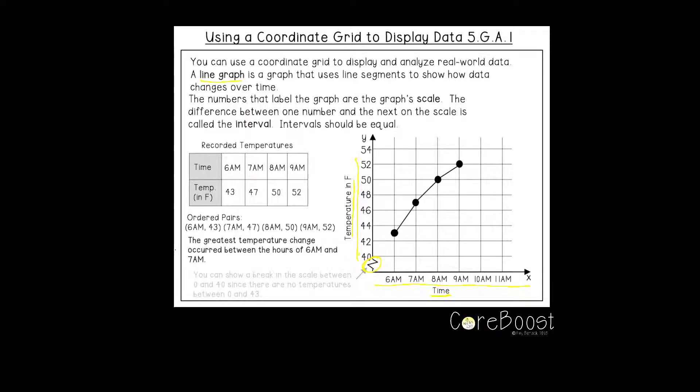So let's take a look at our chart. The title of the table is recorded temperatures. So I have time and temperature in Fahrenheit. At 6am, it was 43 degrees. At 7am, it was 47 degrees. At 8am, it was 50 degrees. And at 9am, it was 52 degrees.